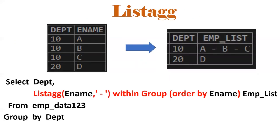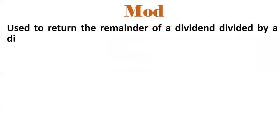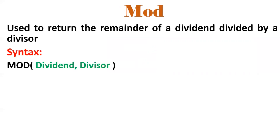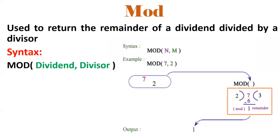Here the delimiter we are using is a hyphen. This is the query to get the required output. Next one is MOD. MOD is nothing but a remainder — the remainder we get from a dividend divided by a divisor. The syntax is MOD(dividend, divisor). For example, MOD(7, 2) will return 1 as output, since 1 is the remainder.